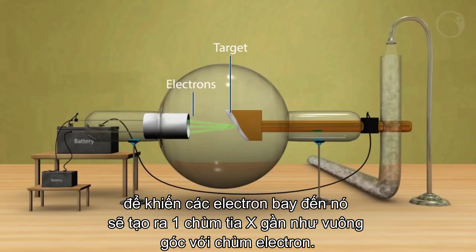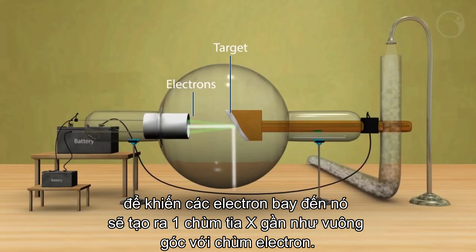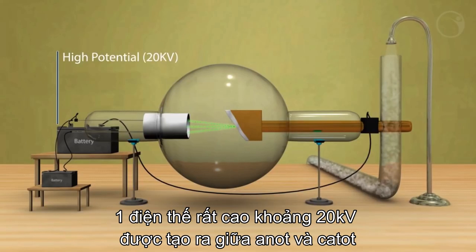The target is also tilted at an angle of 45 degrees, causing the electrons to hit at an angle. This will produce the X-rays almost perpendicular to the electron beam.